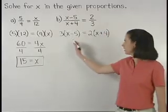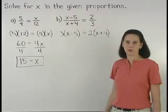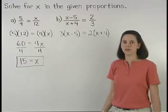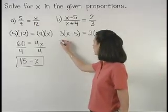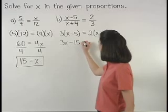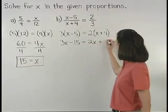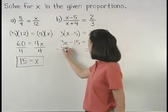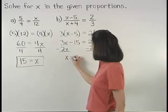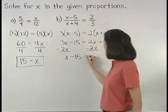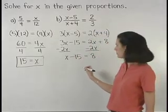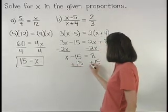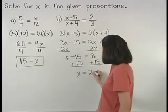Notice that we put the x minus 5 and the x plus 4 in parentheses. Now, distributing on both sides of the equation, we have 3x minus 15 equals 2x plus 8. And subtracting 2x from both sides gives us x minus 15 equals 8. And adding 15 to both sides, we find that x equals 23.